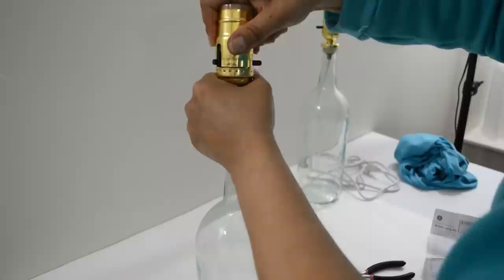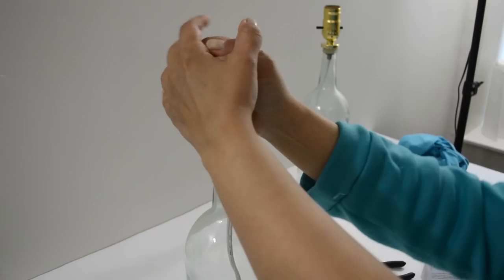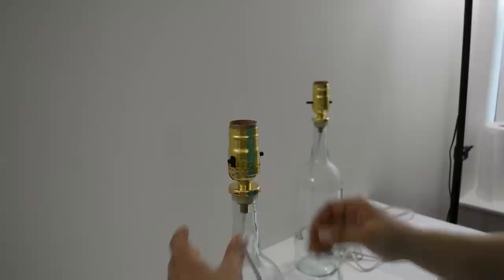Push the cork all the way down and that's it. Screw in the light bulb, plug it in and turn it on.